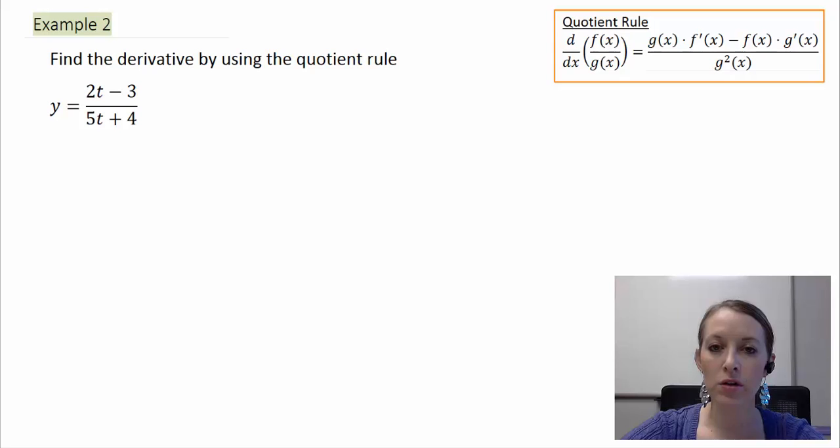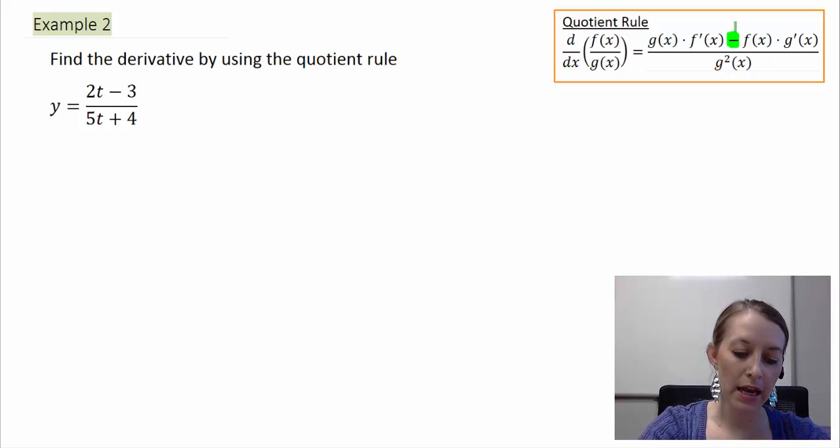Remember it's very similar to the product rule with the exception of instead of adding it, we actually subtract and then we divide it all over the original denominator squared. Or the trick to remember the rule is singing the song: low d high minus high d low all over low squared. So that's kind of an easy way to remember it. Let's go ahead and do the derivative of it by utilizing the quotient rule.